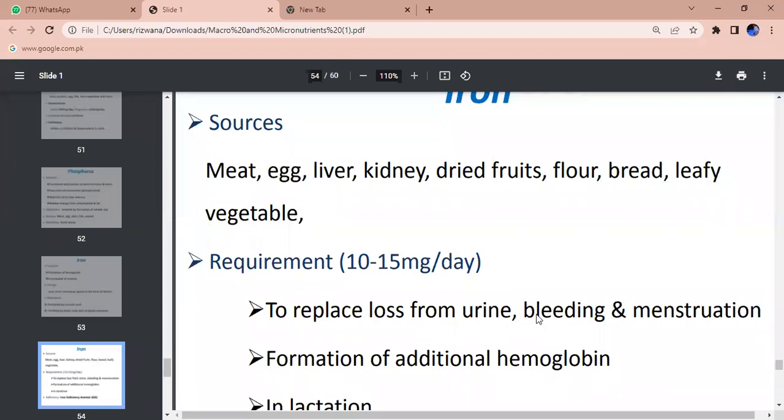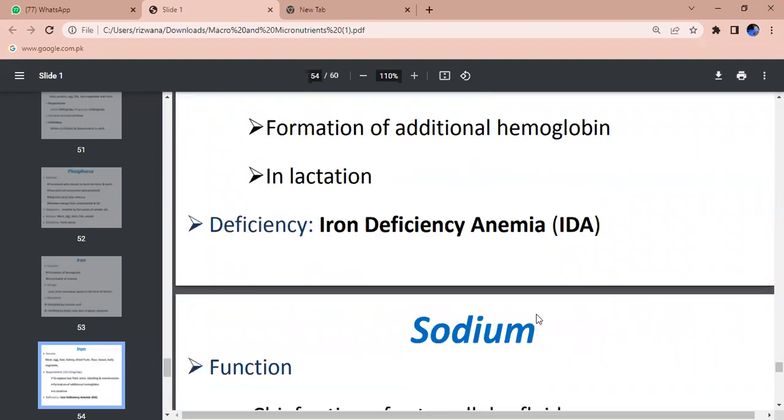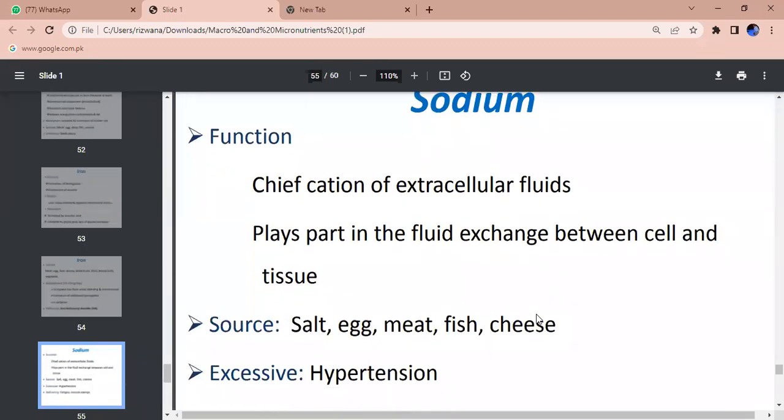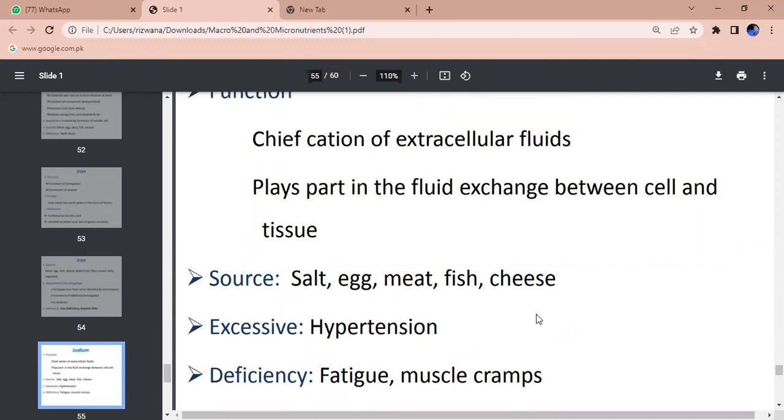Sodium - chief cation of extracellular fluid. Plays part in fluid exchange between cell and tissue. Causes depolarization - cardiac depolarization. Maintains osmotic pressure. Sources - salt, meat, fish, cheese. Excess can cause hypertension. Deficiency - fatigue, muscle cramps, disorientation.